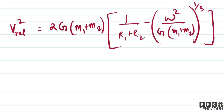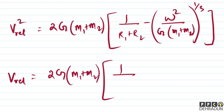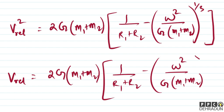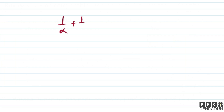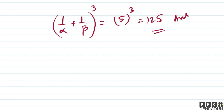So v_relative = √{2G(m1+m2) × [1/(r1+r2) − (ω²/(G(m1+m2)))^(1/3)]}. Comparing with the given expression, α = 1/3 and β = 1/2. Therefore 1/α = 3 and 1/β = 2. So (1/α + 1/β)³ = (3+2)³ = 5³ = 125. That is our final answer.